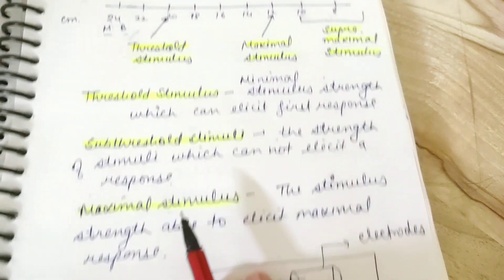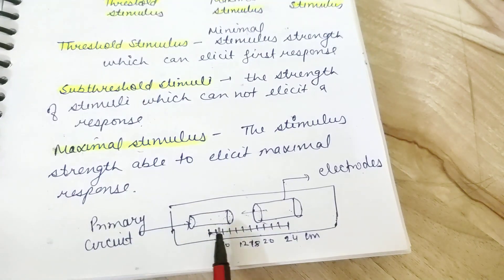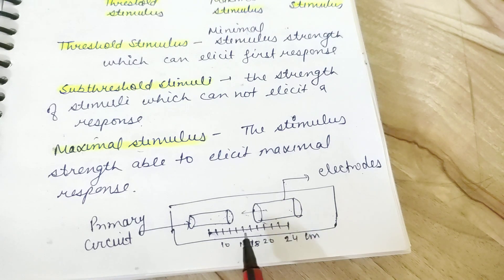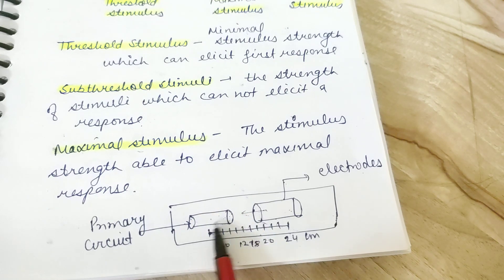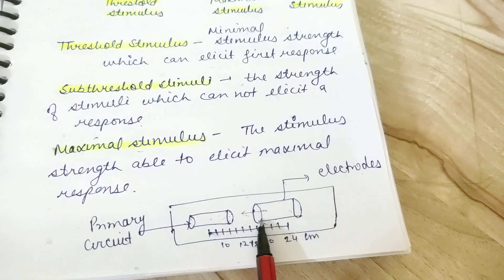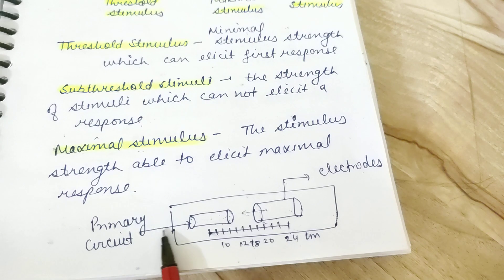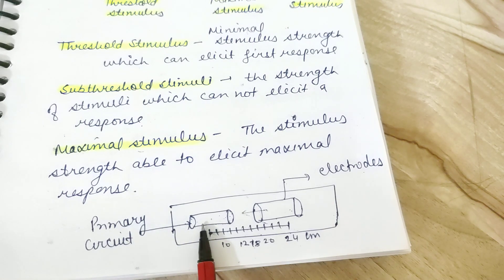The experiment was done using a primary coil — this is just a representative image of the DuBois-Raymond induction coil, which you must have drawn in your manuals. Basically, we have a primary coil and a secondary coil. The primary circuit is connected to the primary coil, so DC current flows through it.